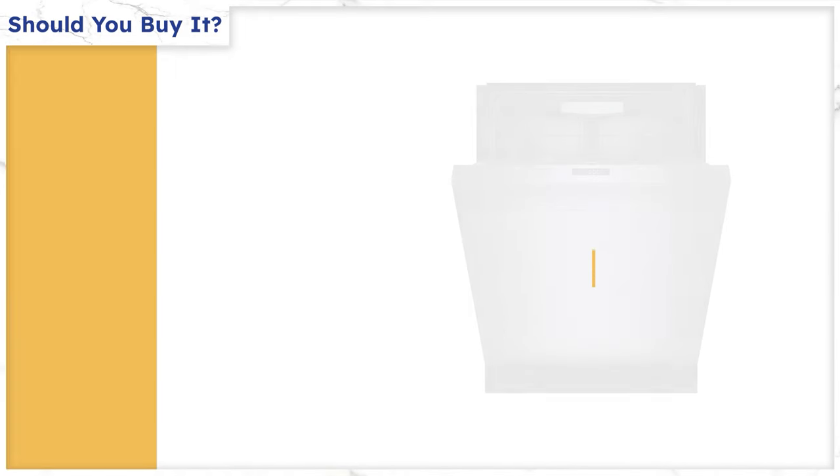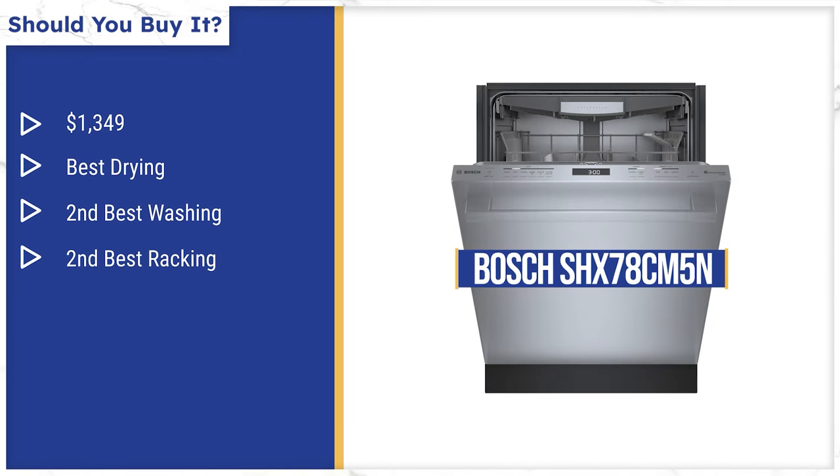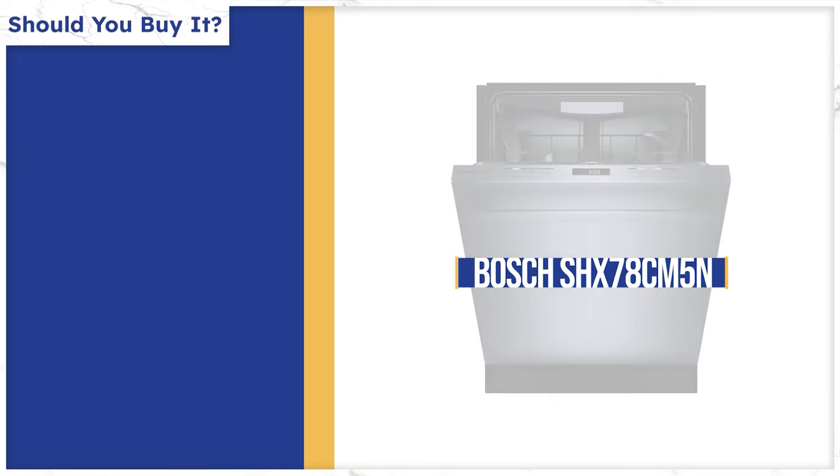The Bosch costs $13.49 depending on when you buy it and it's a good less expensive alternative to the $2,000 Miele. Although the Miele was better for washing and racking. However LG, GE and Beko are all interesting alternatives to Bosch and they cost $200 to $400 less.